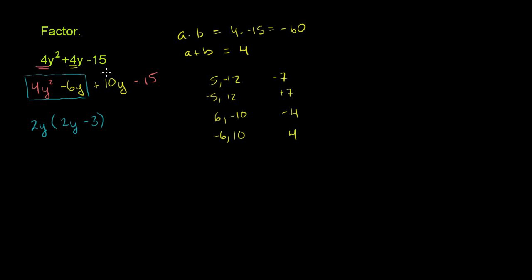Now let's look at this other group right here. This was the whole point about breaking it up like this. Here, the greatest common factor is a 5. So we can factor out a 5. This is equal to plus 5 times 10y divided by 5 is 2y. Negative 15 divided by 5 is negative 3. And so we have 2y times 2y minus 3 plus 5 times 2y minus 3.